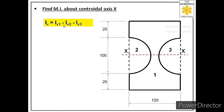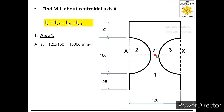We first find Ix1, the moment of inertia of the rectangular area about the main axis XX. The first step is to find the area of this rectangular area: area equals length times width, so 120 times 150 gives 18,000 mm². Next, we locate its centroid, which lies at L/2 and B/2. With L = 120 mm, L/2 = 60; with B = 150 mm, B/2 = 75. So the centroid G1 is located at 60 mm from the left and 75 mm from the bottom.